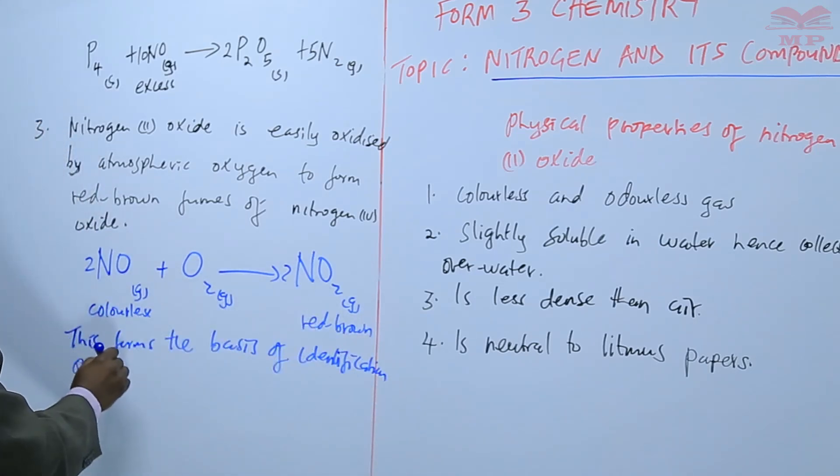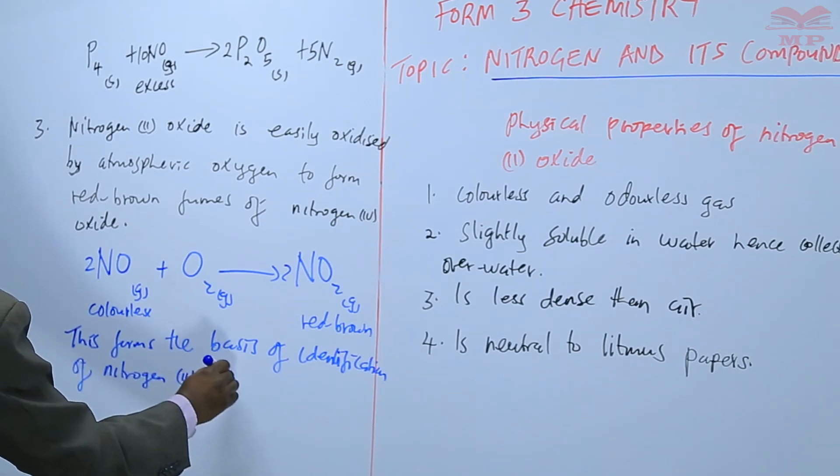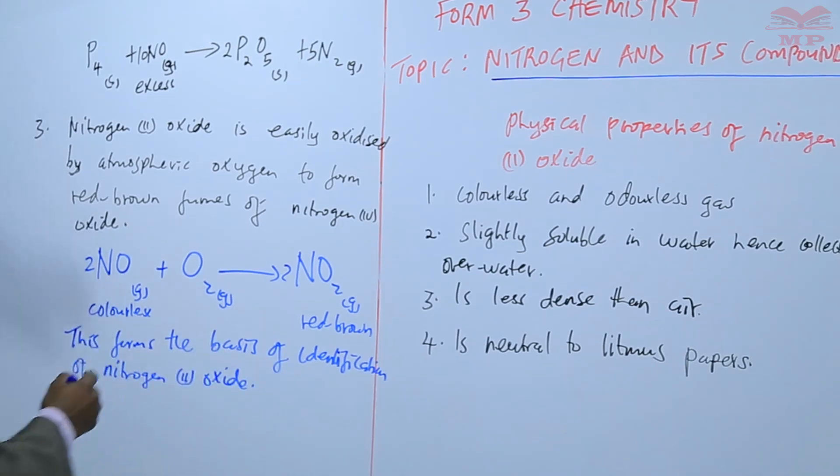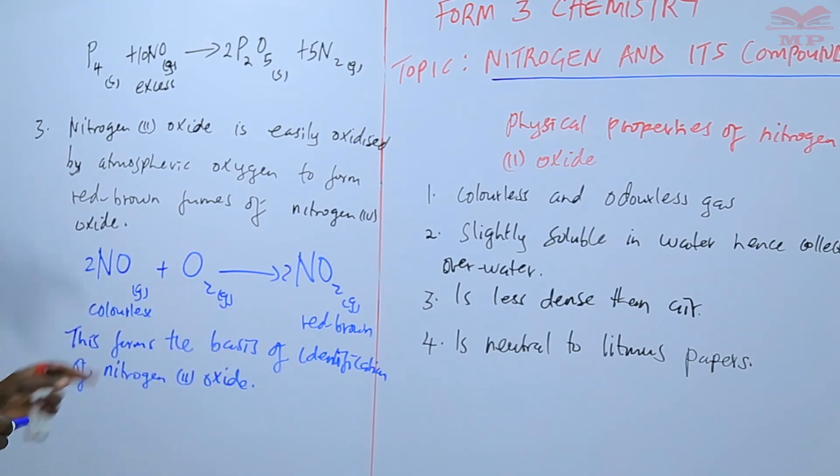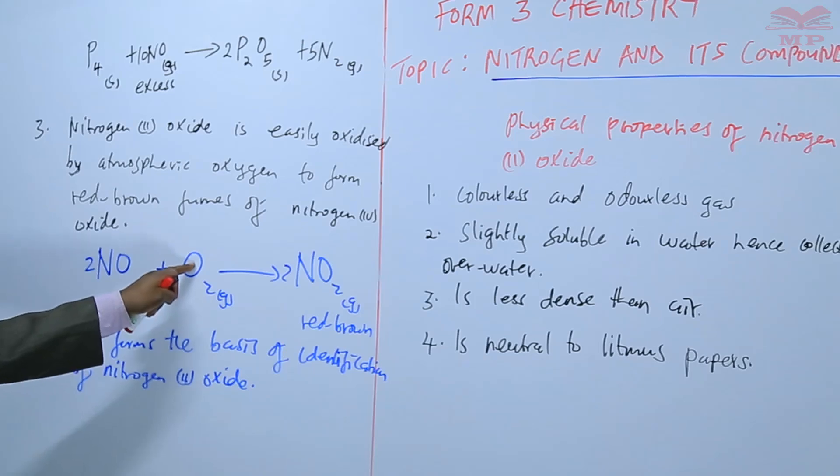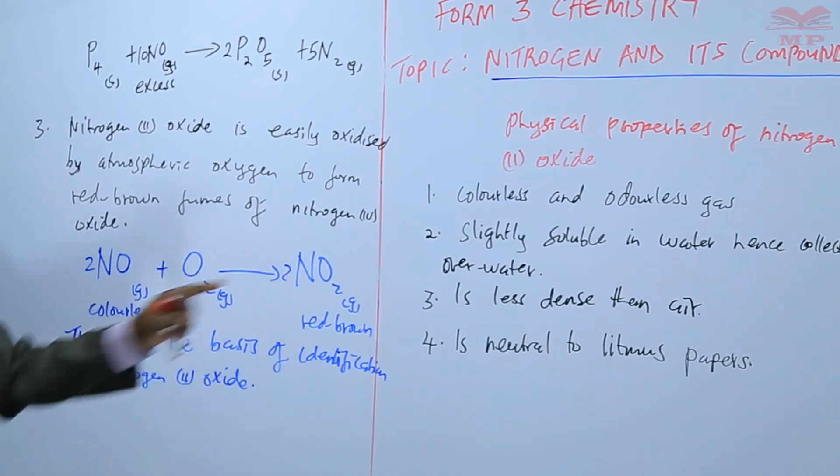This equation forms the basis of identification of nitrogen 2 oxide: that the moment it is exposed to the air, it turns red brown, yet it's a colorless gas. That is because it is immediately oxidized to nitrogen 4 oxide.